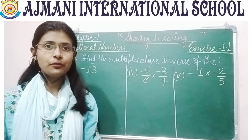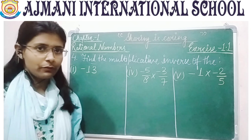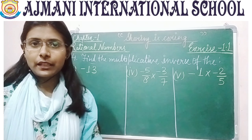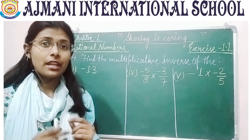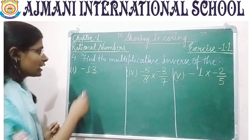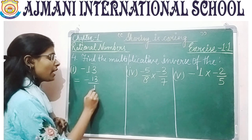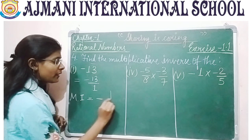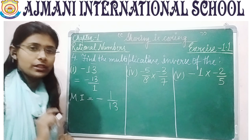Let's move to question number 4: find the multiplicative inverse of the following. Keep in mind that for multiplicative inverse, you do not change the sign — you interchange the numerator and denominator. For minus 13, consider it as minus 13 by 1; its multiplicative inverse is minus 1 by 13. You simply exchange the numerator with the denominator.